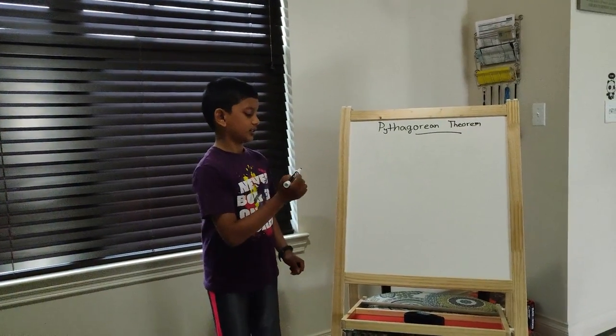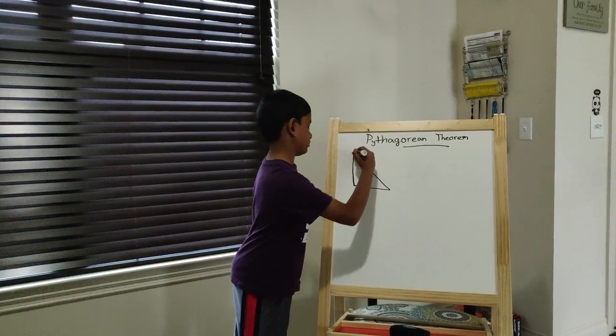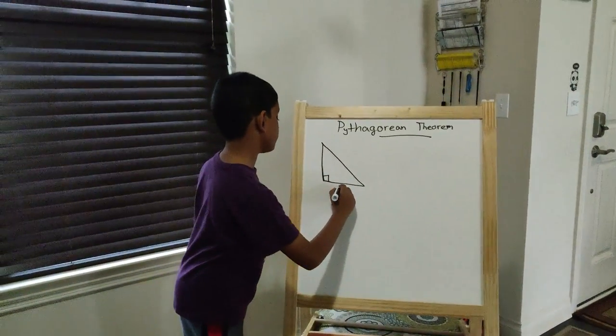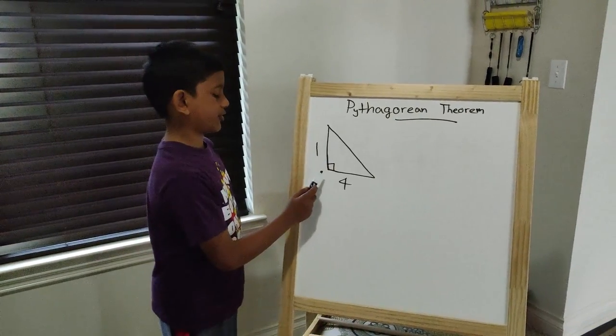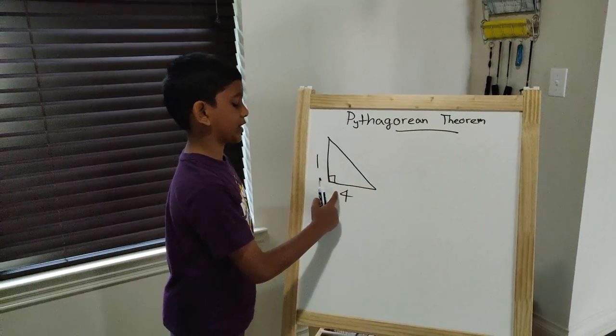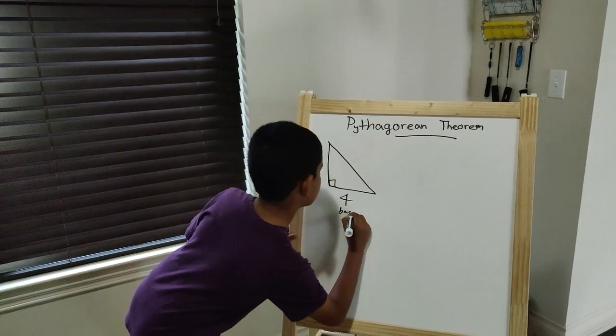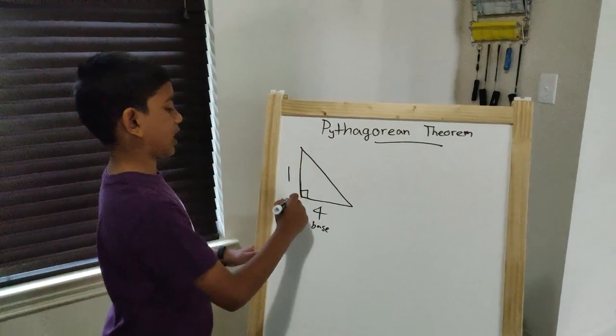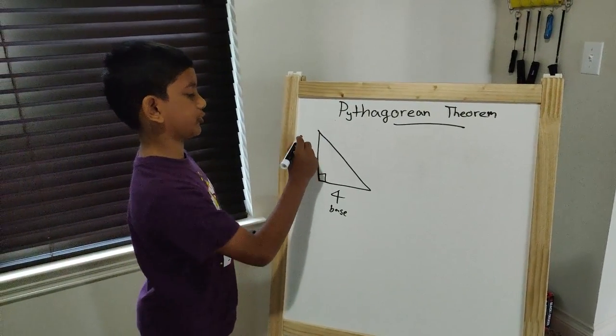So take this as an example. You must learn this. The bottom part of the triangle is called the base. The height, this is the height, or it can be called the altitude.